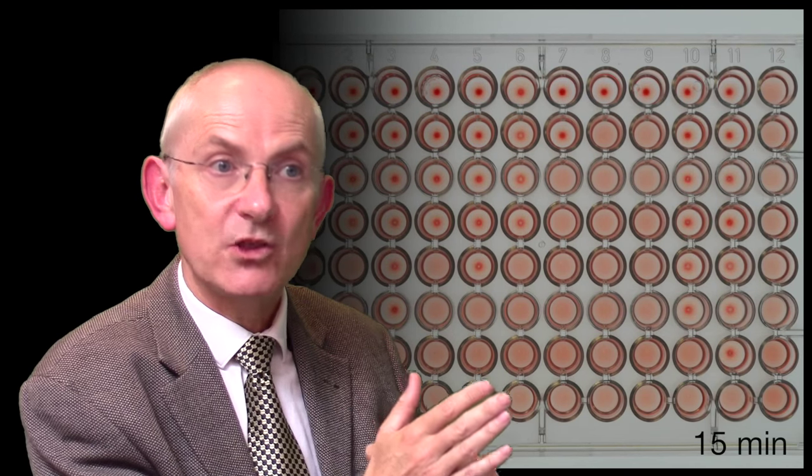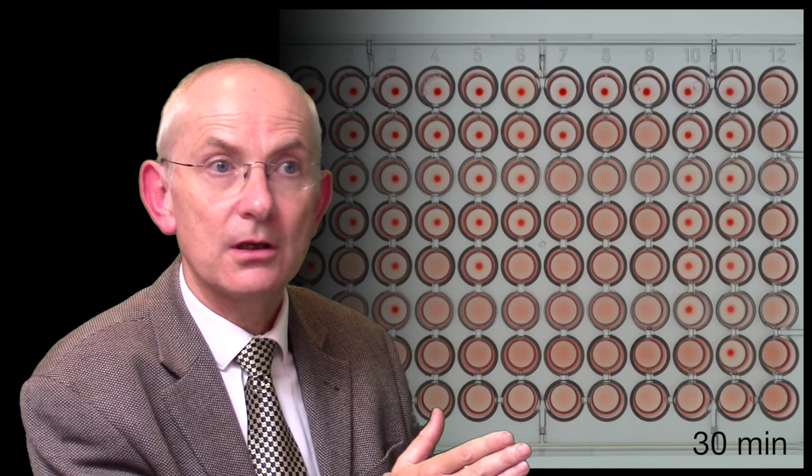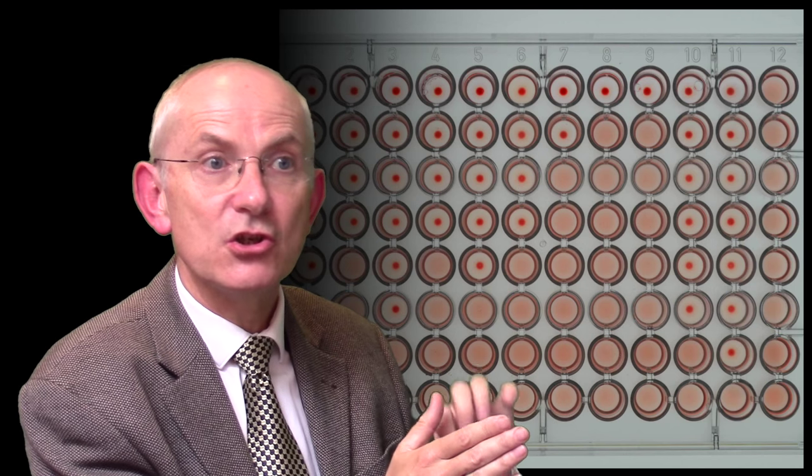At the end, we note the last well in which a button has formed and we say that's the endpoint of the titration. And by looking at the dilution of serum that went into that well, we can describe the titer of the original serum in terms of its ability to neutralize that particular antibody.